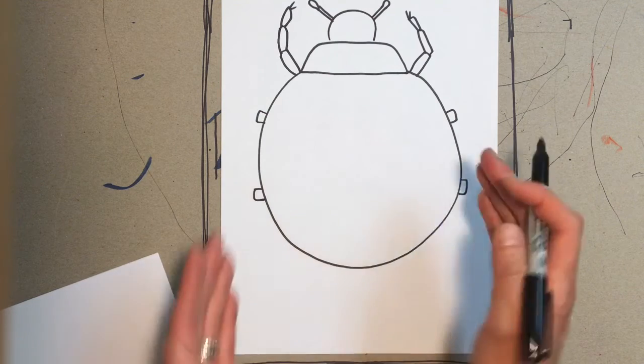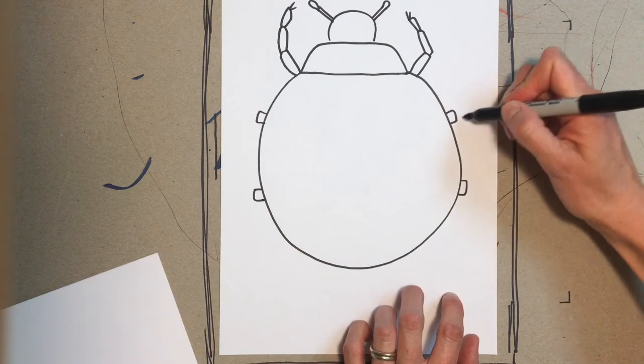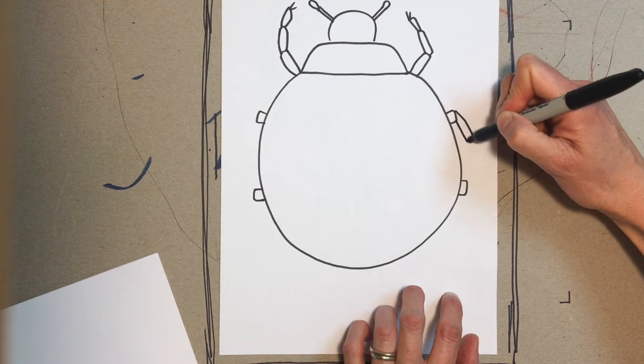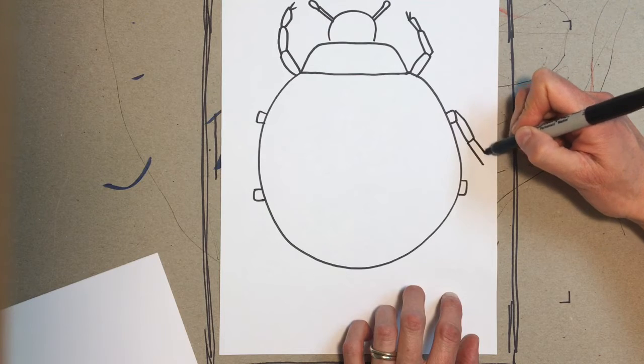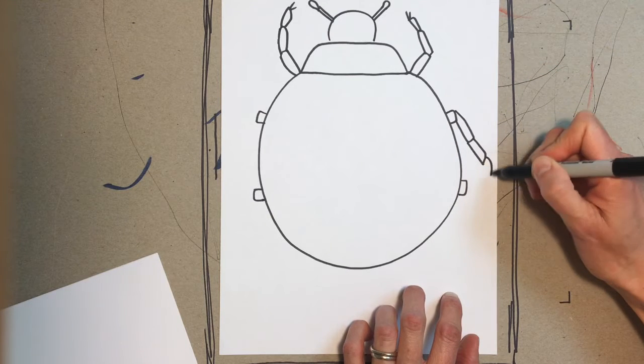Now I'm gonna make these legs go down. Gonna make those little kind of rounded off rectangle shapes and for these feet it's like an arch and then like a little bit of a zigzag for like little grippers.